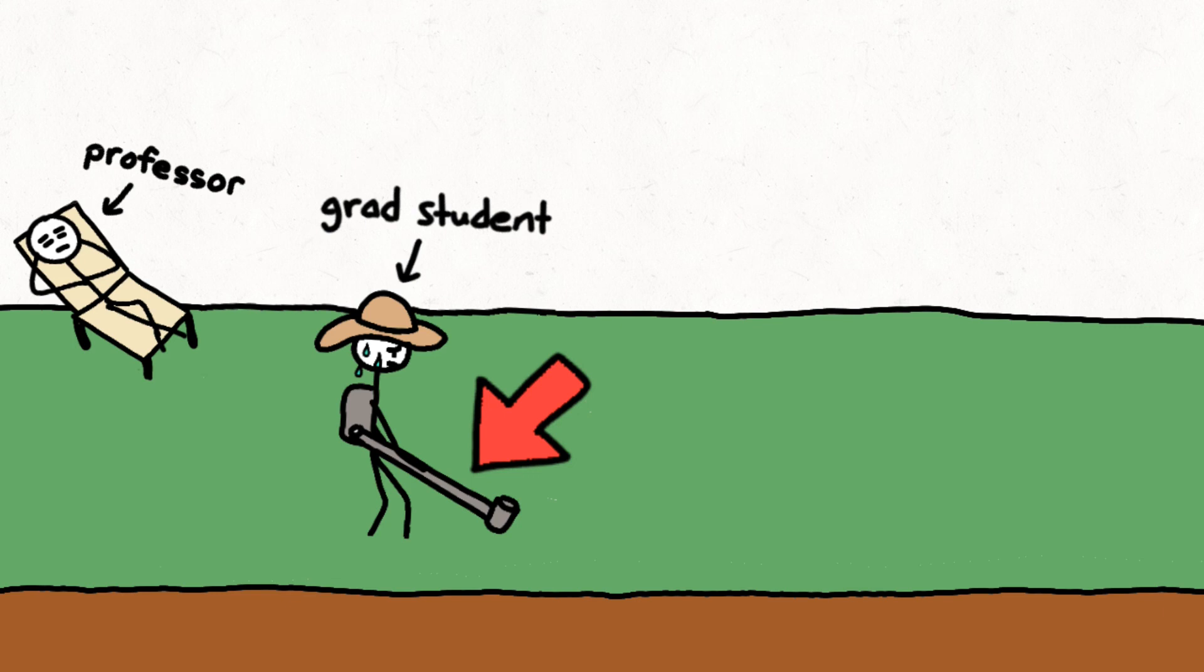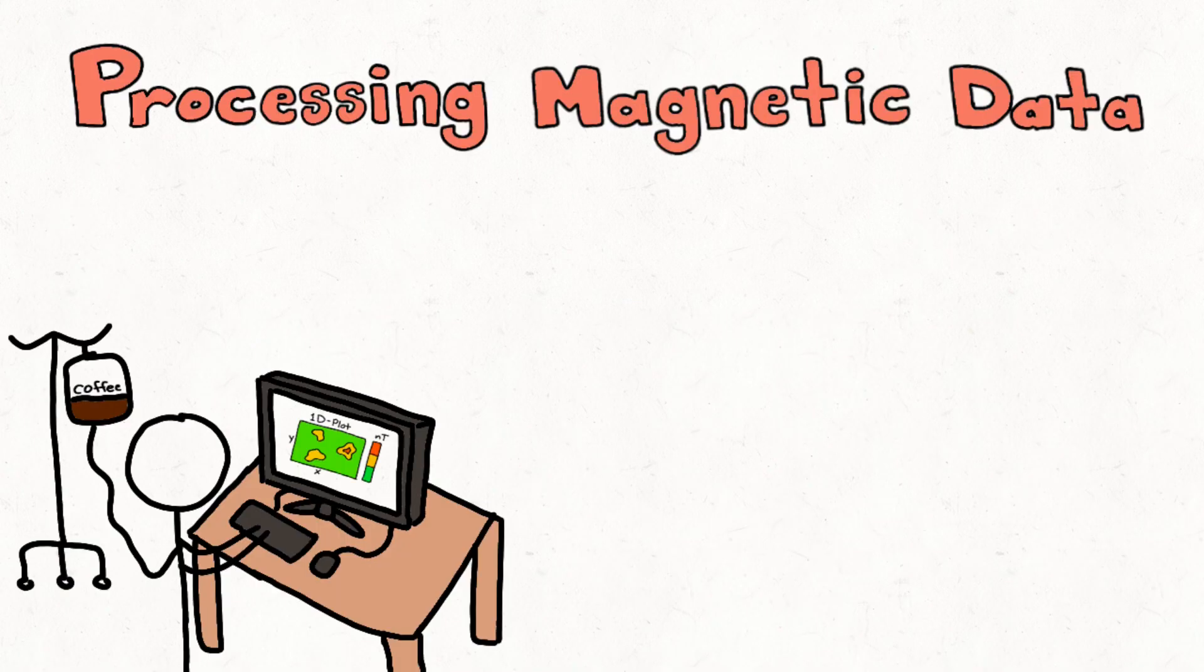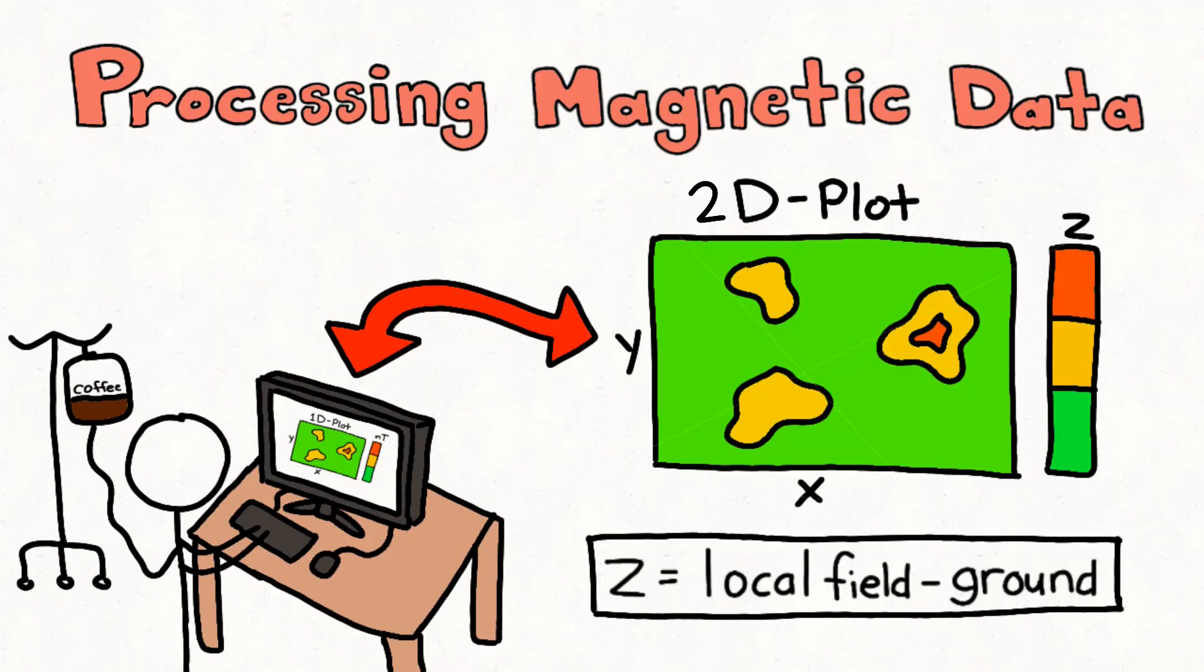While measurements on the ground are being taken with a magnetometer, another instrument known as a base station simultaneously records the Earth's local magnetic field every few seconds. Once a survey is completed, differences between the local field measurements and the ground measurements are plotted on a two-dimensional magnetic plot.